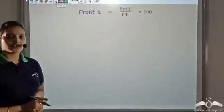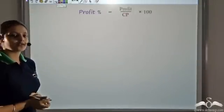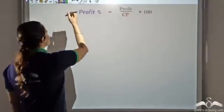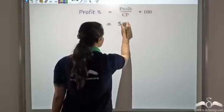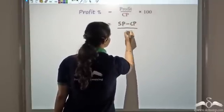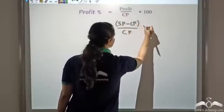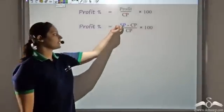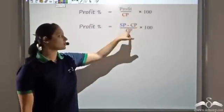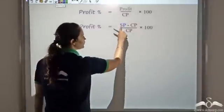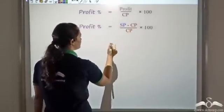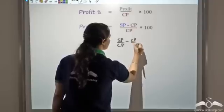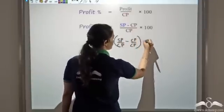We know profit percentage is profit upon cost price into 100. Selling price does not appear anywhere in this formula. So I want to introduce selling price into it. I know profit is selling price minus cost price, so I will write profit as selling price minus cost price. This gives: profit percentage is selling price minus cost price, divided by cost price, into 100. Now I can divide both these terms by the cost price in the denominator — this gives me SP upon CP minus CP upon CP, all multiplied by 100.